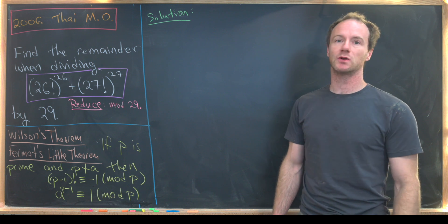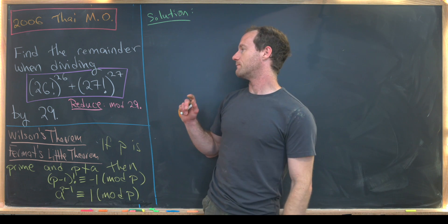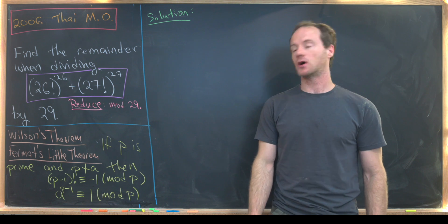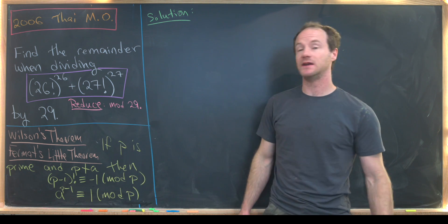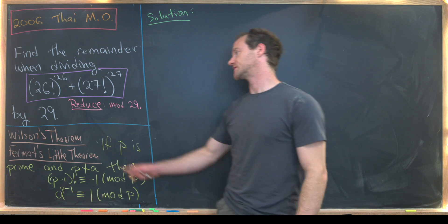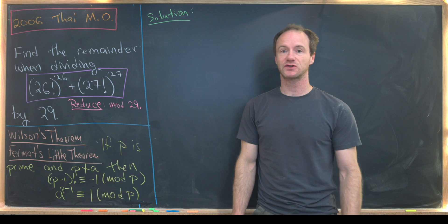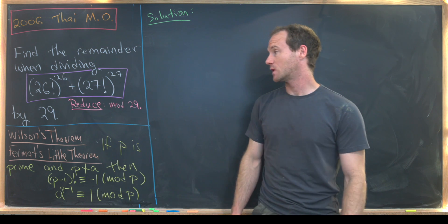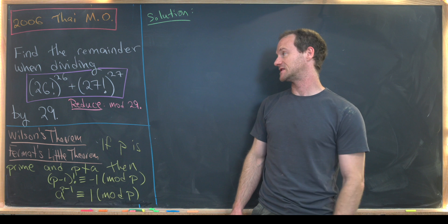So let's see what our goal is. We want to find the remainder when dividing this astronomically large number by 29. So let's look at what that number is. It's 26 factorial to the 26th power plus 27 factorial to the 27th power.